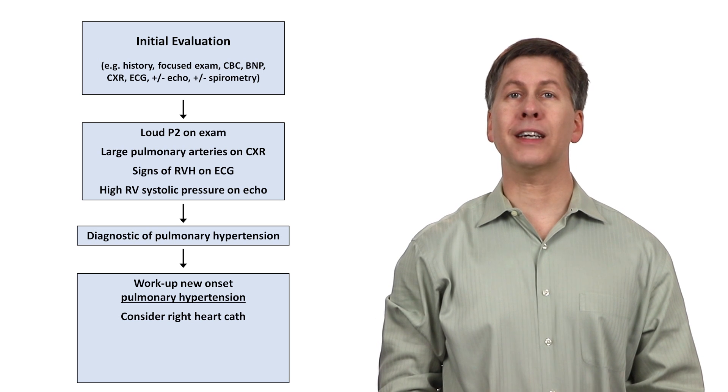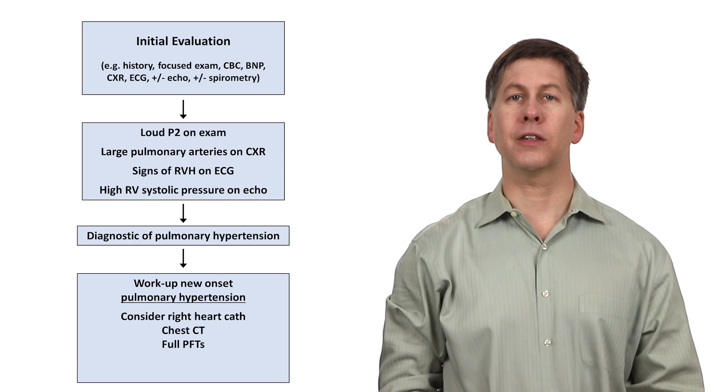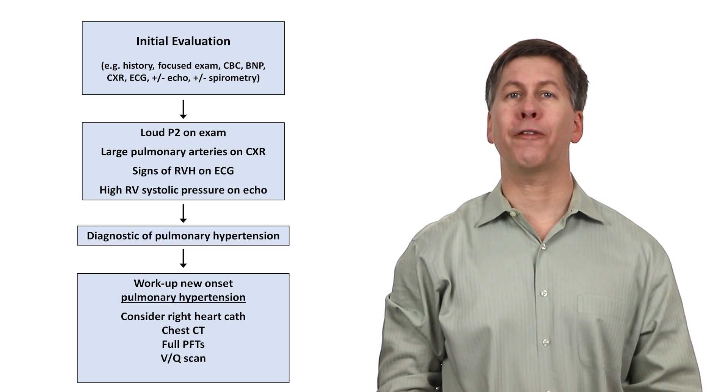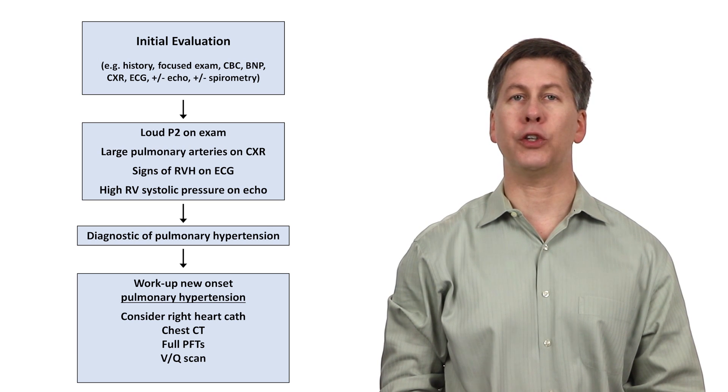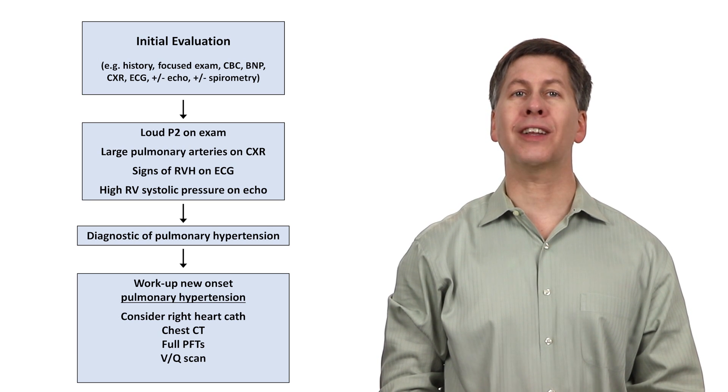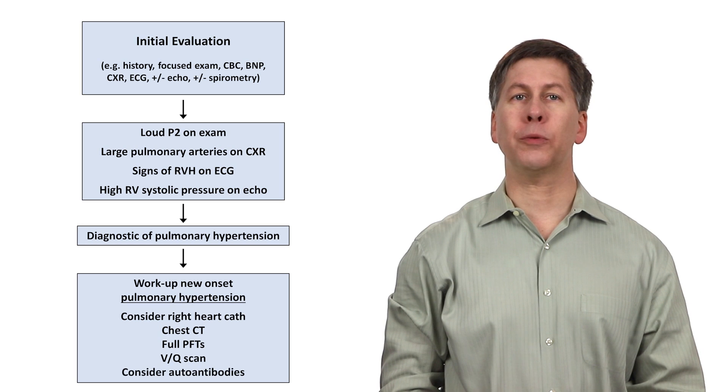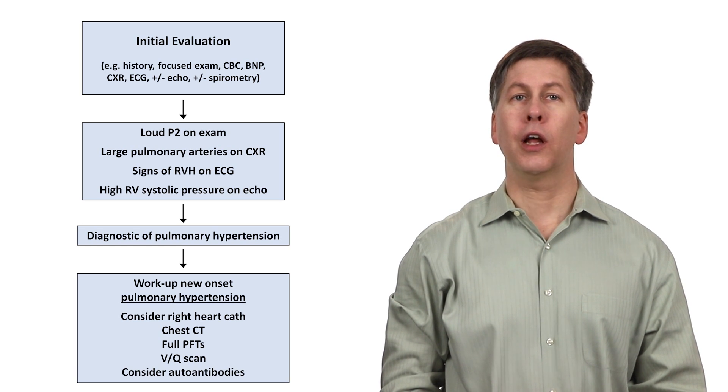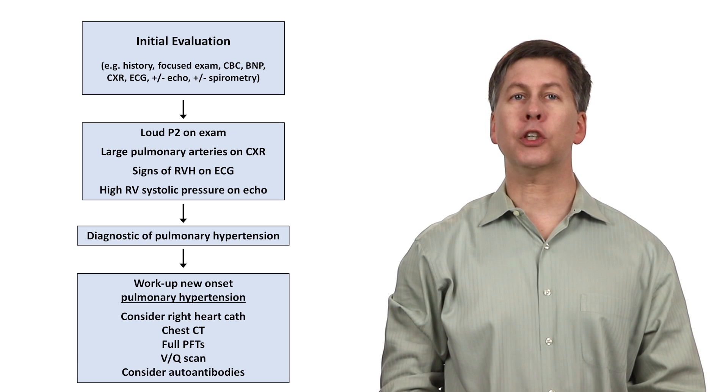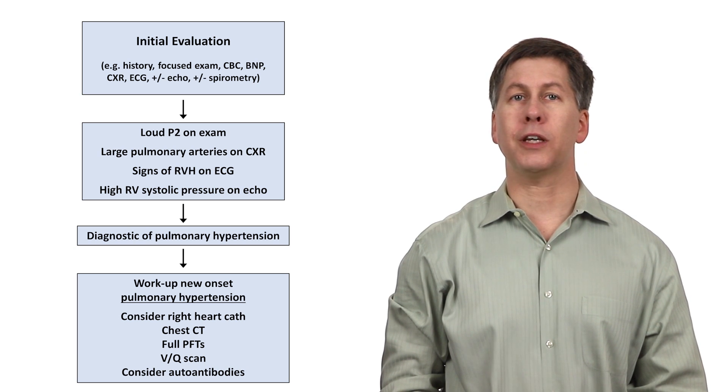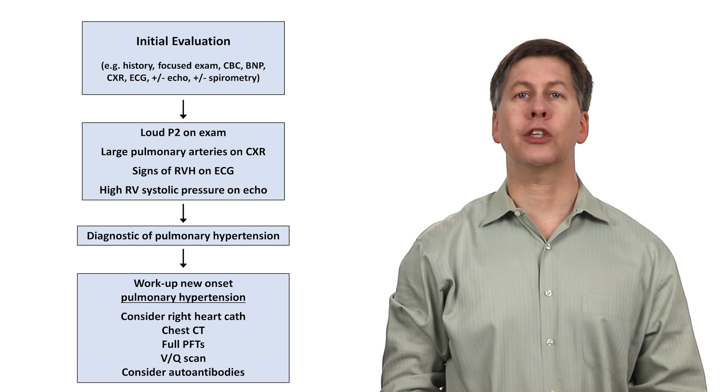Other diagnostic steps taken at this point include a chest CT, full pulmonary function tests, a VQ scan, which is the preferred test for chronic thromboembolic disease instead of a CT angiogram. Also, in select patients, consider autoantibodies for rheumatologic diseases that are associated with pulmonary hypertension, though most such autoantibodies have poor specificity, leading to a high false positive rate if they are ordered indiscriminately.